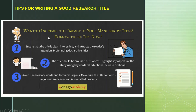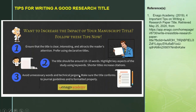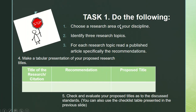Here are additional tips for writing a good research title based on Enago Academy. Now you're ready to do the following task. First, choose a research area of your discipline — research area should be broader in scope. Second, identify three research topics. Third, for each research topic, read a published article specifically the recommendations. Fourth, make a tabular presentation of your proposed titles. Fifth, check and evaluate your proposed titles according to the discussed standards — you can also use the checklist table presented in the previous slides.